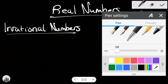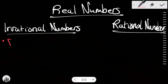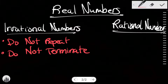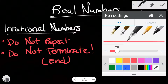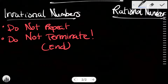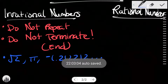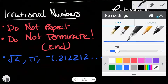Irrational numbers are numbers that do not repeat as well as they do not terminate, meaning they do not end. A couple examples of irrational numbers are the square root of 2, pi, and something like negative 1.2122... which just goes on and on.